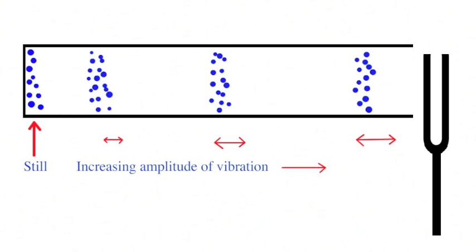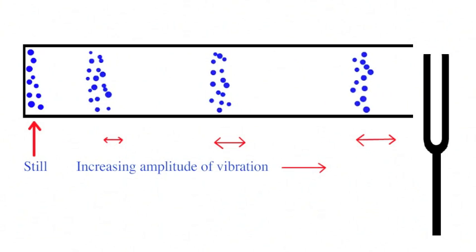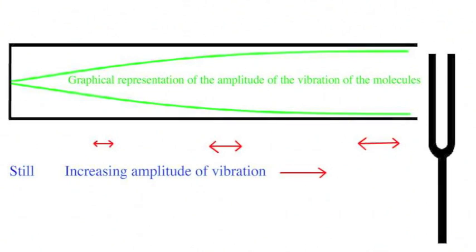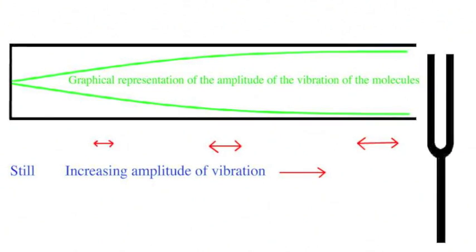If we measure the increasing amplitude as we move down the tube and then turn that into a graph along the tube, the line shown in green would look something like this.